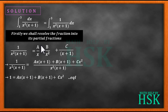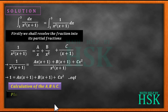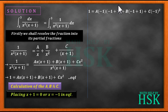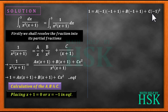Only after calculating A, B, and C can I get the resolved partial fraction. To find C, I place x plus 1 equal to 0, i.e., x equals minus 1, into equation 1. This gives 1 equals A·(minus 1)·(0) plus B·(0) plus C·(minus 1) squared. The first two terms vanish, and since (minus 1) squared equals 1, I get C equals 1.